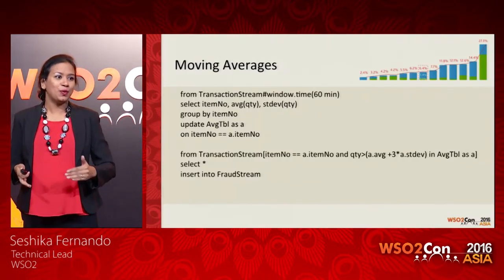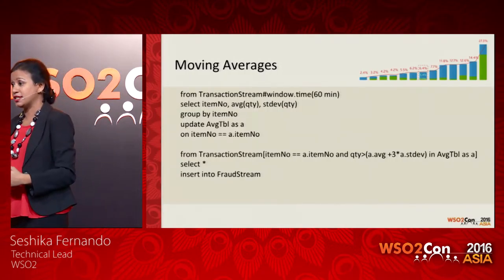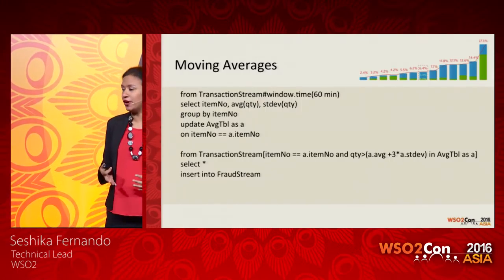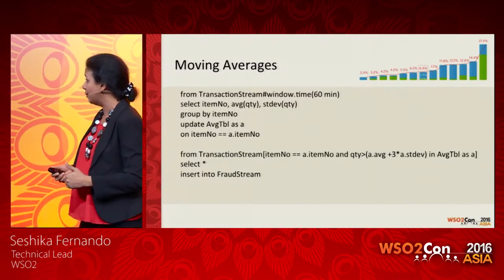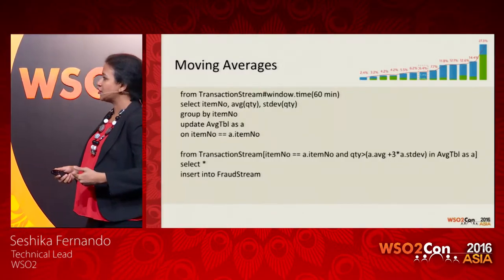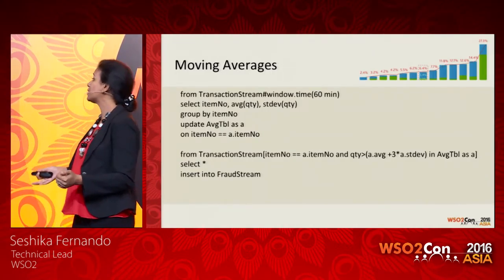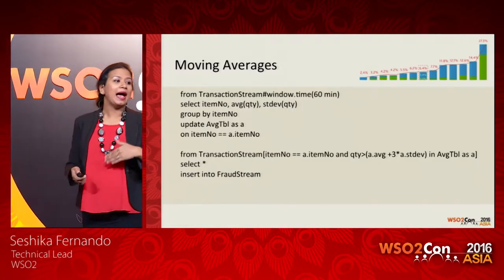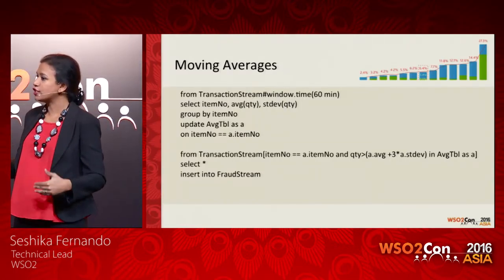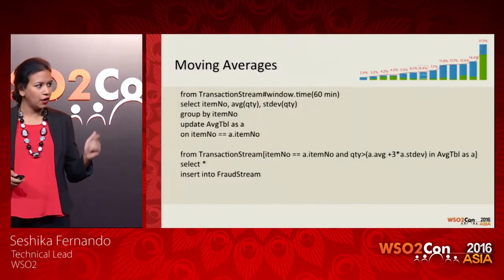This is real-time, so we don't have time to write to disk and retrieve data. We use an in-memory event table because all processing happens in memory. The second query does the detection: we take each transaction from the stream, compare it with our definition of normal — in this case average plus three standard deviations — to see whether the quantity is larger than the 99th percentile of quantities seen so far. If so, we send an alert to the fraud stream.